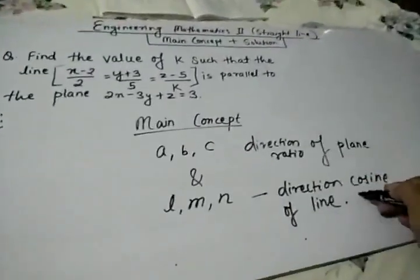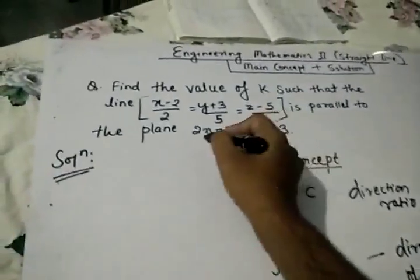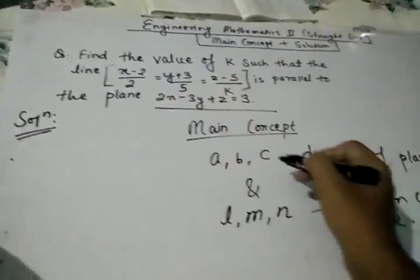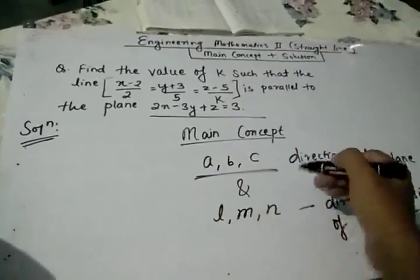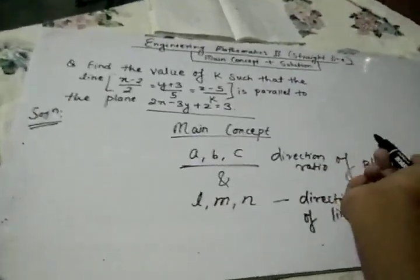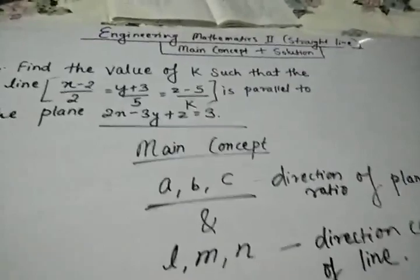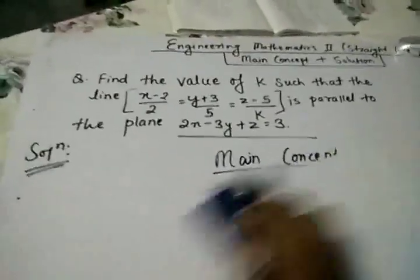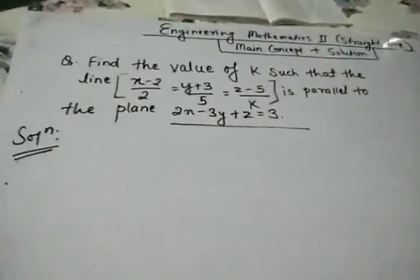This line has direction cosines and this plane has direction ratios. In this way we will solve it. Let us move on to our solution.